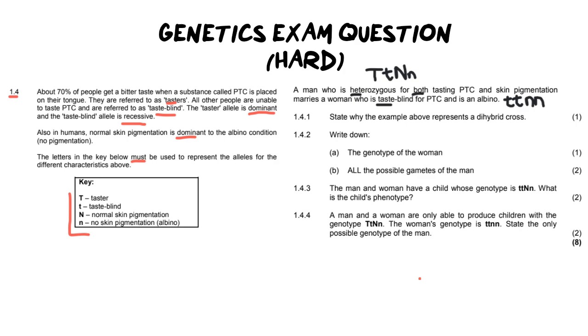So the first question says state why the example above represents a dihybrid. It's only for one mark and the short answer is well it's a dihybrid because we are crossing two different genes. Please be careful to use the word gene and not allele. Allele refers to a variation of a gene.